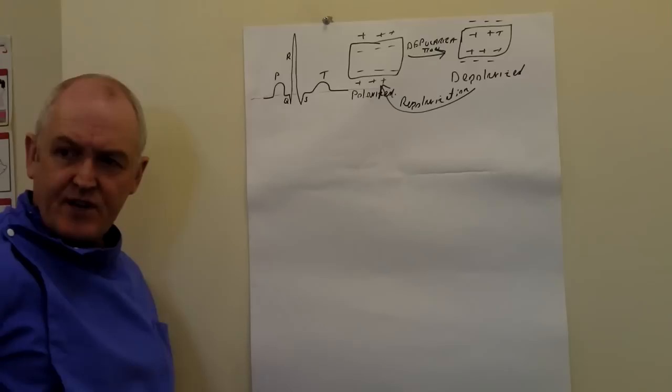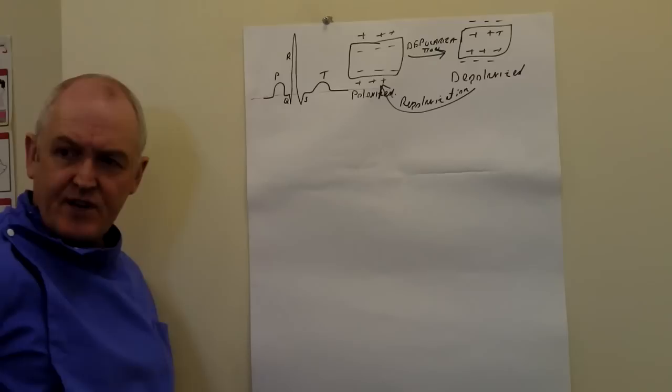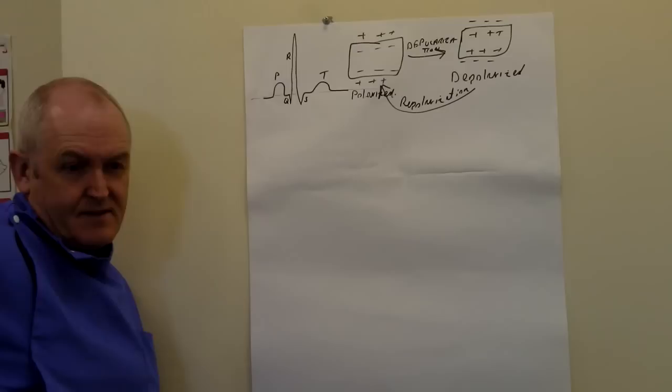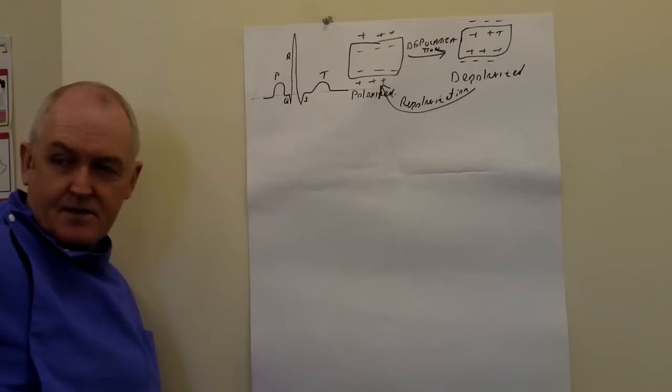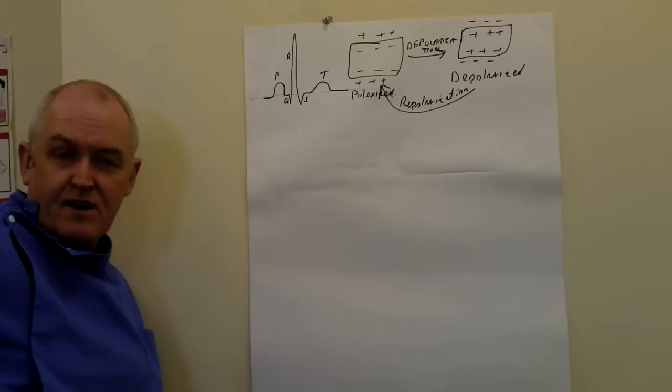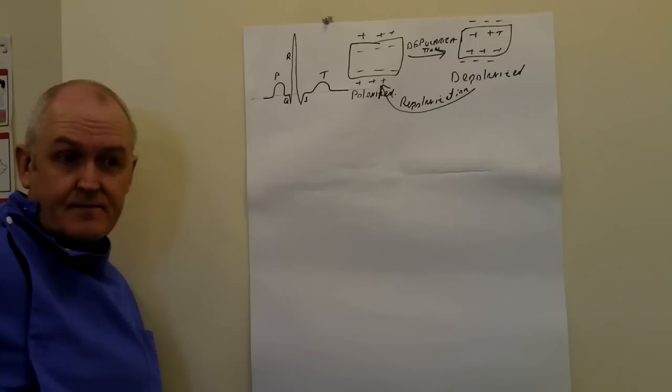So the P wave is the electrical activity as detected on the surface of the body that occurs as a result of atrial myocardial depolarisation. It's the depolarisation of the atria — in other words, it's when the atria contract. So the P wave is atrial contraction.